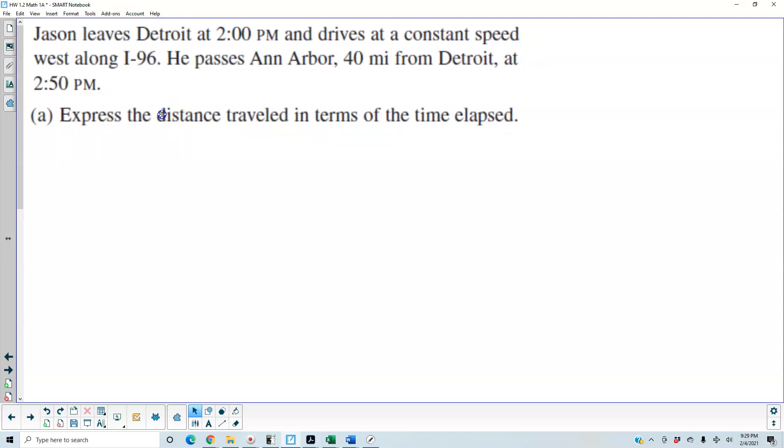Jason leaves Detroit at 2 PM and drives at a constant speed west along I-96. He passes Ann Arbor, 40 miles from Detroit, at 2:50 PM.